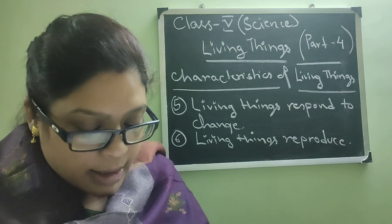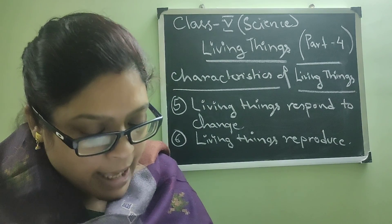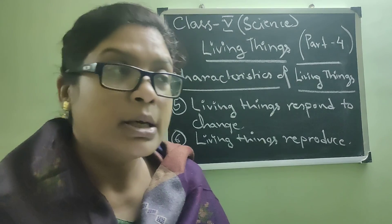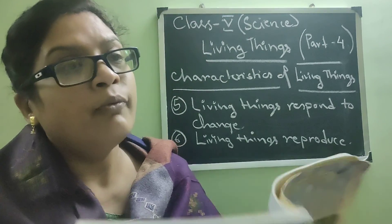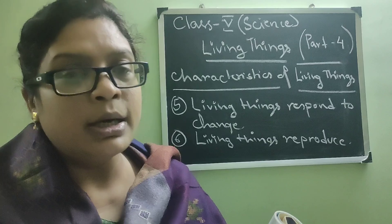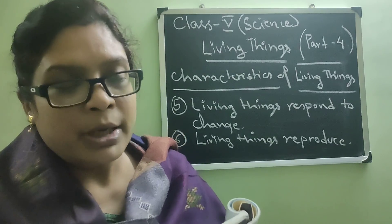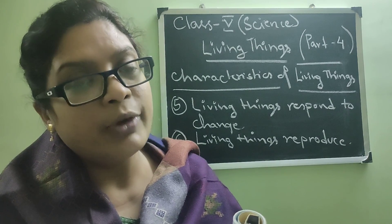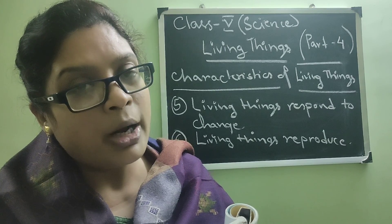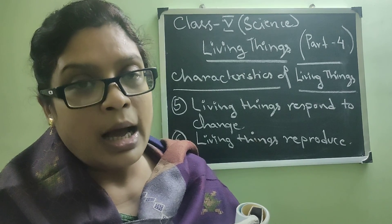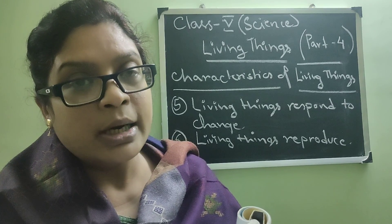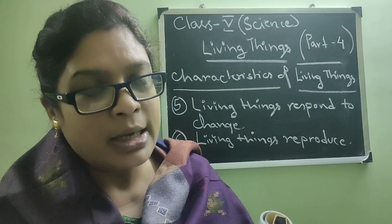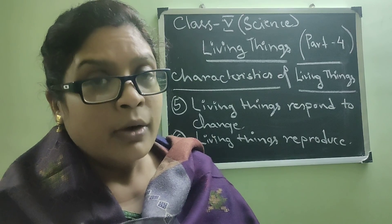The sense organs in animals help them to feel changes in their surroundings. In upcoming chapters, we will see that we have five sense organs in our body: eyes, nose, ears, tongue, and skin. With these five sense organs, we feel our surroundings and respond accordingly.